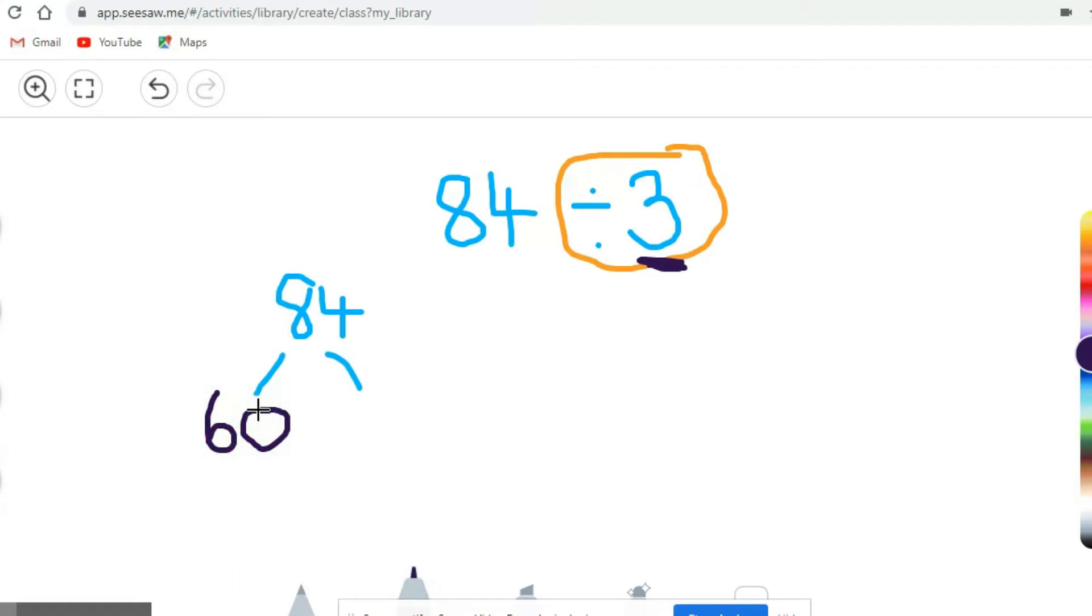So a really easy way to partition 84 into two different numbers would be to do 60. 60, I know, is in the 3 times table. How many times does 3 fit into 60? Well, if I know that 10 times 3 is 30, so what do I multiply 3 by to get to 60? Good, 20. So 3 fits into 60 twenty times.